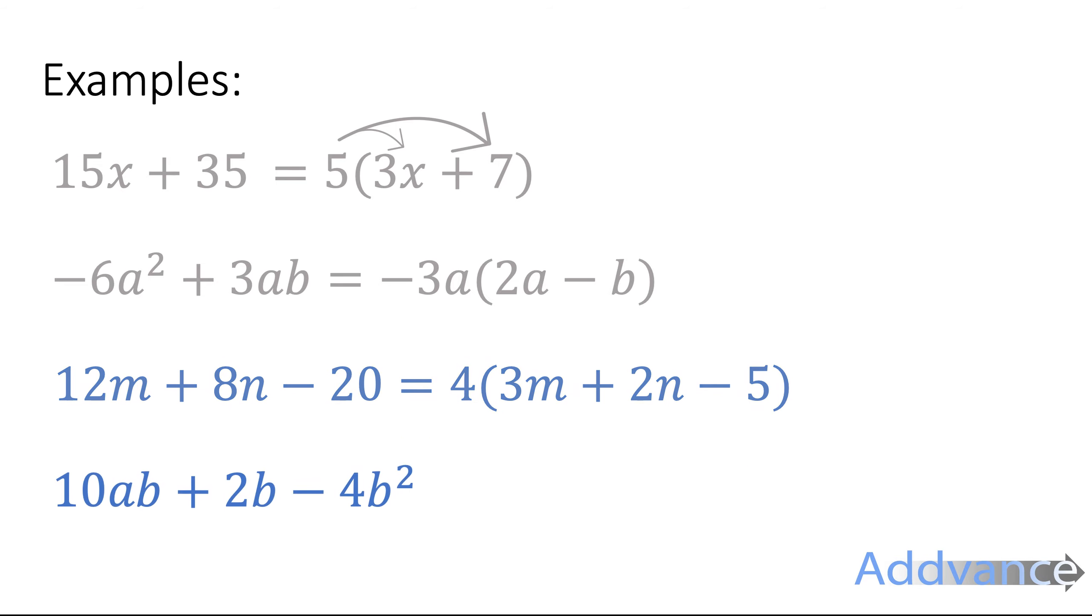Okay, next one: 10ab plus 2b minus 4b squared. All of these terms can take out a 2b. All of those numbers are even so they can be divided by 2, and all those terms have a b in, so we can take a 2 and a b out. Then what's left inside is 2b times 5a will be 10ab, 2b times 1 will be 2b, and 2b times minus 2b will be minus 4b squared.